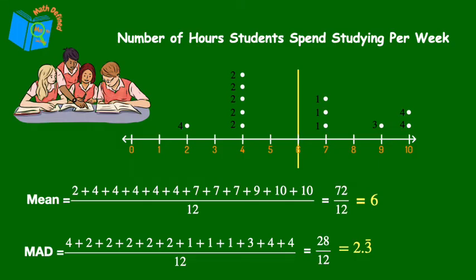So what does this value really show us? The MAD of 2.3 means that each data point or each dot on this dot plot is on average 2.3 units away from the mean of 6 when looking at it on a number line.